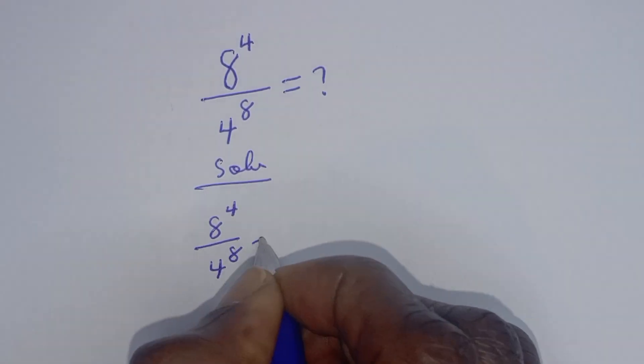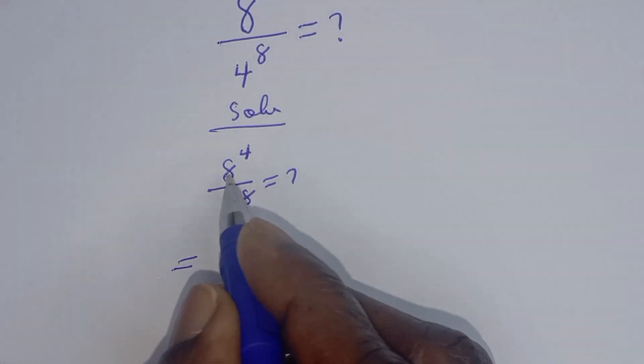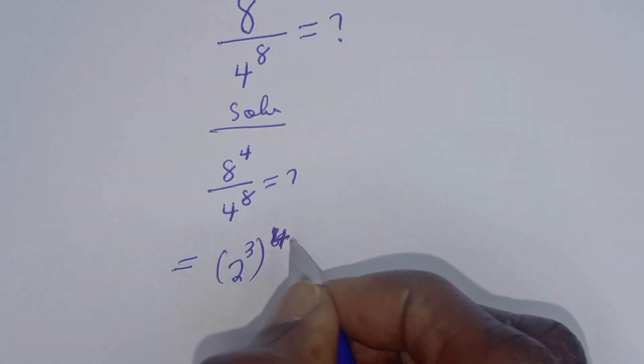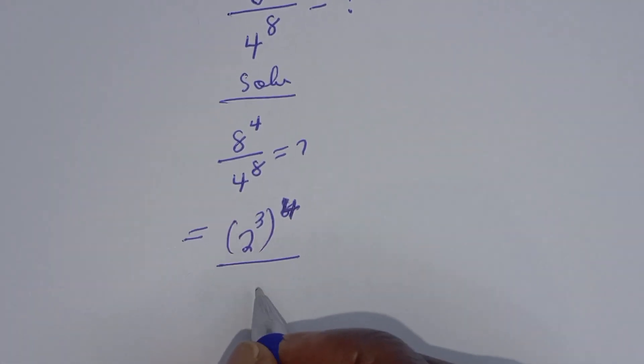This is equal to 8 raised to power 4, which can be written as 2 to the power 3 to the power of 4, divided by 4 raised to power 8, which can be written as 2 raised to power 2 to the power of 8.